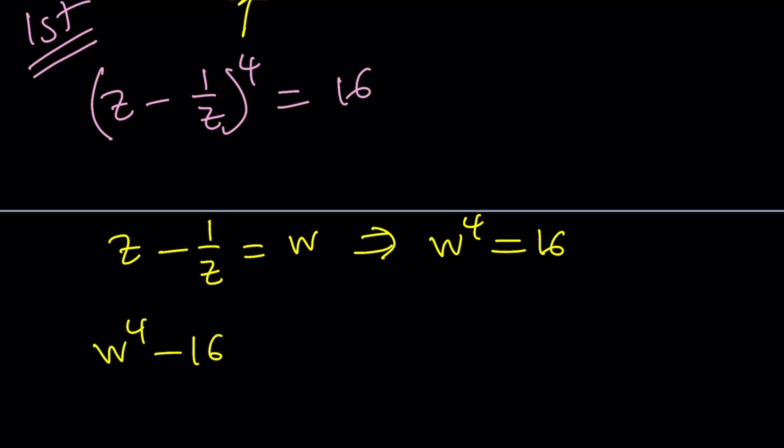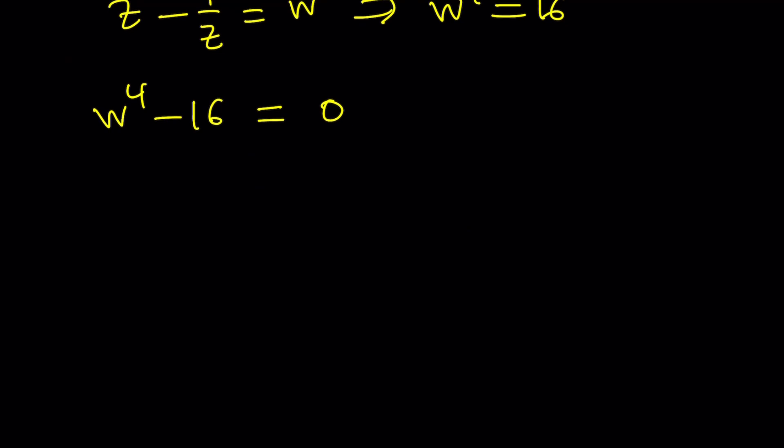Let's put everything on the same side. This looks like difference of two squares, doesn't it? Let's factor it into W squared plus 4 times W squared minus 4. Then consider each factor, set each factor equal to 0. You get W squared equals negative 4. If you have a little bit of knowledge with complex numbers, you will know that W can be 2i or negative 2i. Because by definition, we know that i squared is negative 1. So if you square 2i, you're going to get 4 times negative 1, which is negative 4.